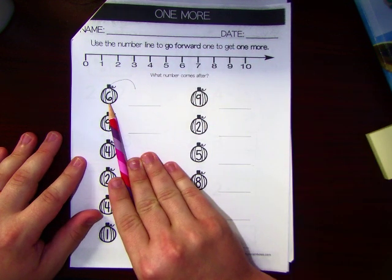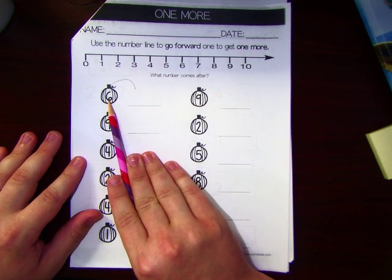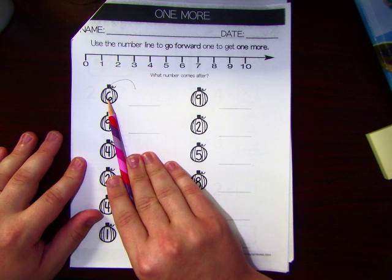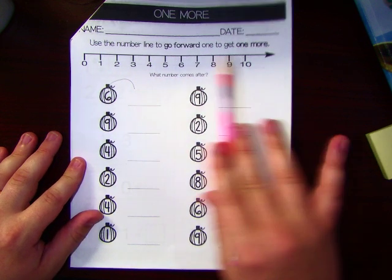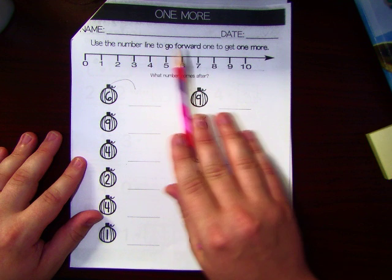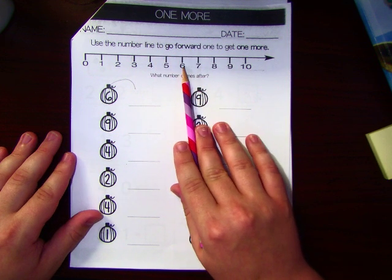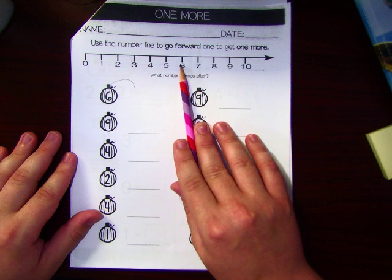Find your first pumpkin. This pumpkin says 6. I'm going to find that on the number line. This is a number line. 6 on the number line is right here. When you want One More, you always go to the, that's right, the right.